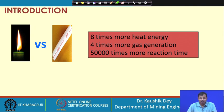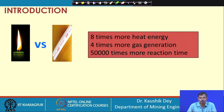Again you will find that the candle is generating 4 times more gas quantity than the explosive. That means the gas quantity is more in the candle and the heat energy released from the candle is more, but no one is afraid to light the candle. No one can use the candle for breaking up the rocks, no one can use the candle to kill someone, but people are using explosive to kill someone, to blast the rock, to blast the building.